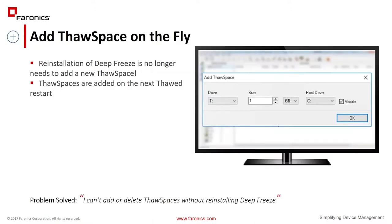We'll start with the ability to add thaw spaces. Today you're used to adding thaw spaces where you have to uninstall and reinstall DeepFreeze should you make any changes to the thaw space configuration. What we've done now is given you the ability to add thaw spaces on the fly. You can change your configuration and it will update on the workstation, and if that configuration has a new thaw space, it will get added during the next thaw restart.